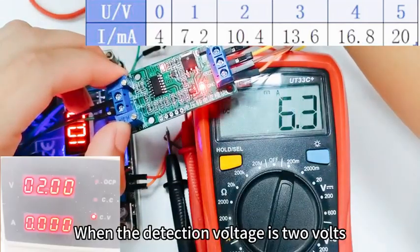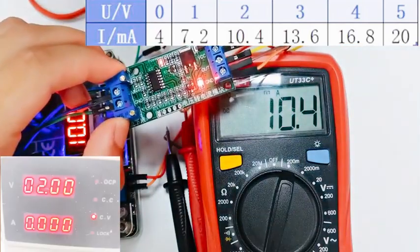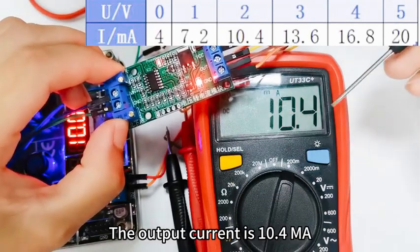When the detection voltage is 2 volts, the output current is 10.4mA.